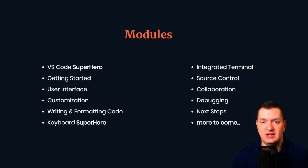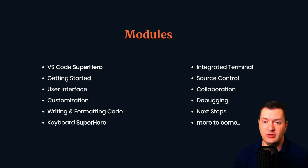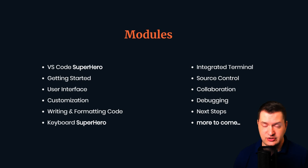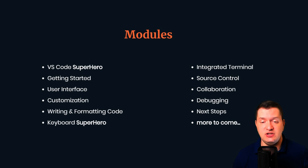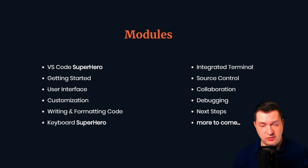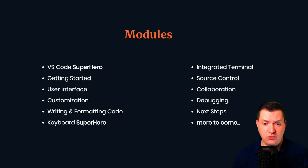So what's included in this course? Initially there are 11 modules. We'll go over the basics — there will be an introduction, and then under getting started we'll do the installation. Then we'll go over all aspects of the user interface, and then the next section, customization, is one of the best features of VS Code — there are so many things you can customize. Then we'll look at writing and formatting your code and all of the keyboard shortcuts that can make you a keyboard superhero.